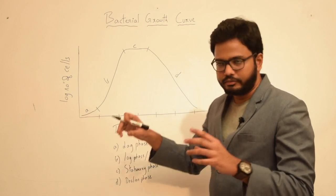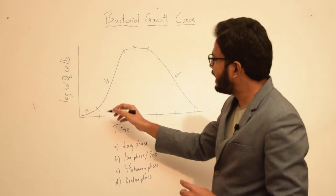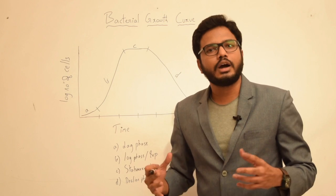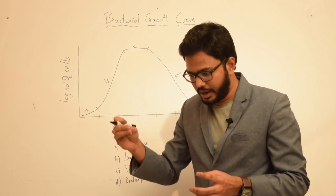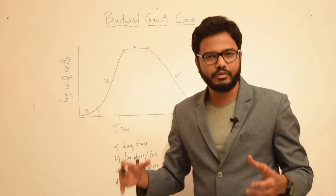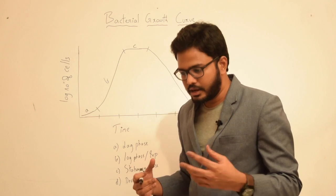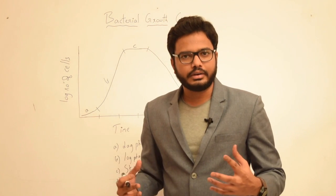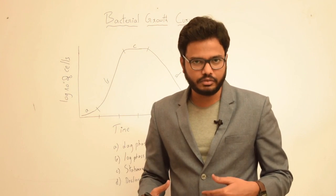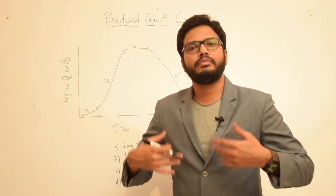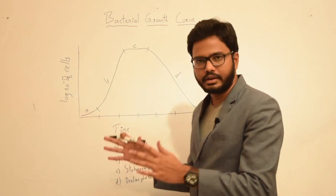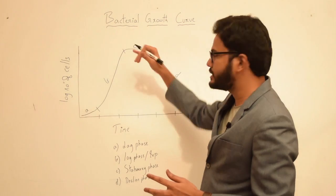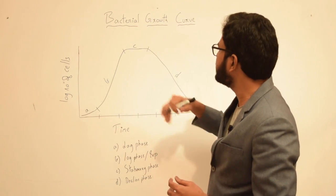To briefly sum up the phases: in lag phase, there is usually no growth observed. This is because when you inoculate bacteria in a new medium or new environment, the bacterial cells take some time to adjust to the new environment, and there is increased metabolic activity so they can prepare for division. In log phase, there is exponential growth with time.